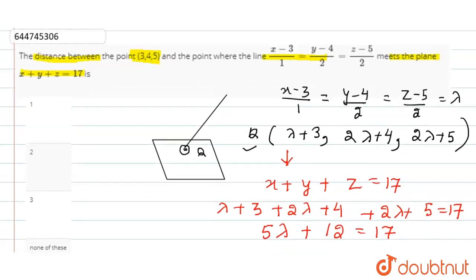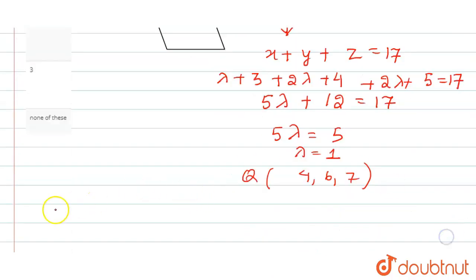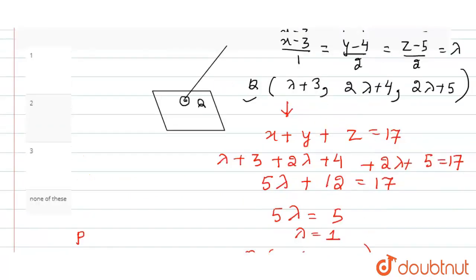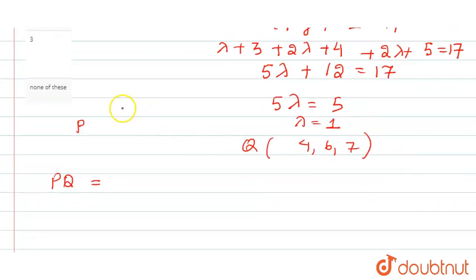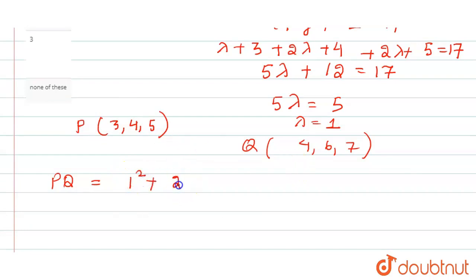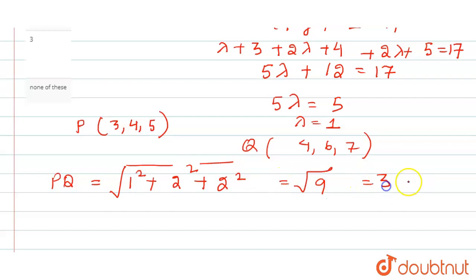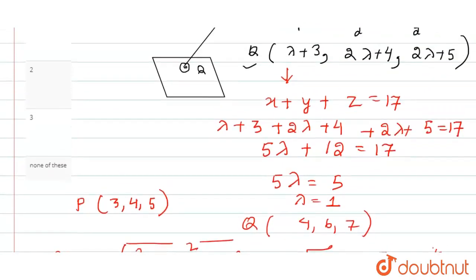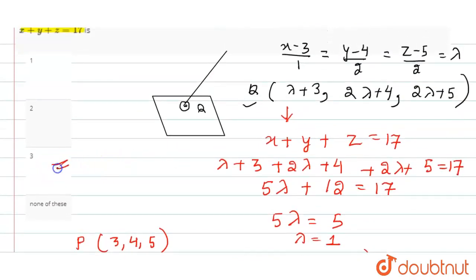Now we need to find the distance between point P = (3, 4, 5) and point Q = (4, 6, 7). Using the distance formula: √[(4−3)² + (6−4)² + (7−5)²] = √[1 + 4 + 4] = √9 = 3 units. Looking at the options, option C is the correct answer.